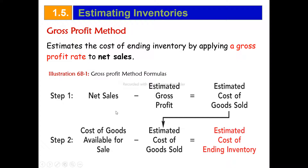The estimated gross profit equals net sales multiplied by the gross profit percentage. For example, net sales is given and the estimated gross profit percentage is applied. You can then find the cost of goods available for sale.